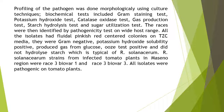The races were then identified by pathogenicity test on a wide host range. All the isolates had fluid pinkish-red centered colonies on TZC media. They were gram negative, potassium hydroxide solubility positive, produced gas from glucose, ooze test positive, and did not hydrolyze starch, which is typical of R. solanacearum. R. solanacearum strains from infected tomato plants in Massano region were Race 3 Biovar 1 and Race 3 Biovar 3. All isolates were pathogenic on tomato plants.